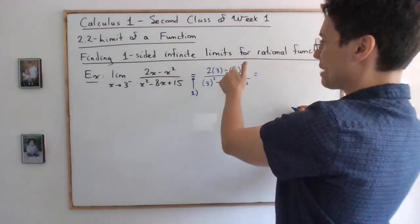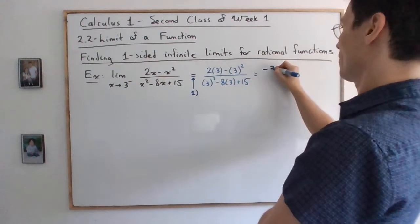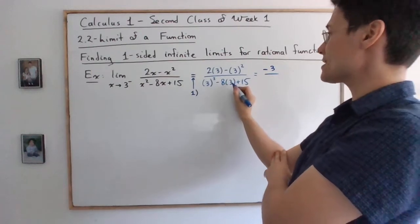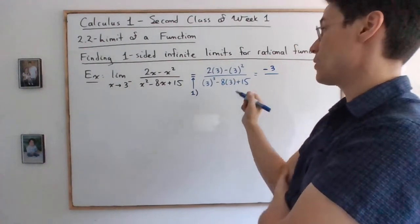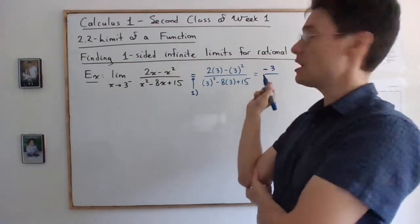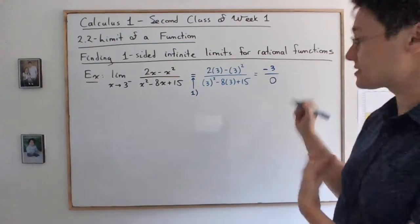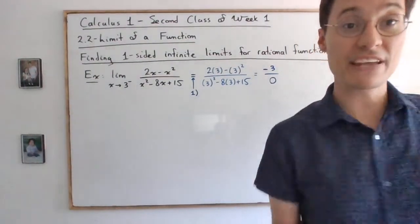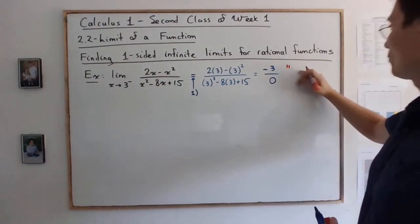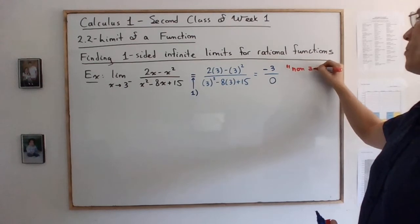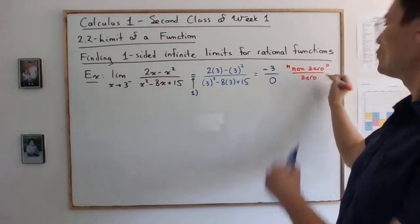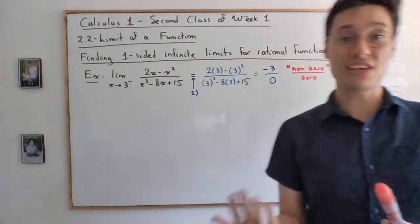So you have 6 minus 9, so negative 3. And then, you have 9 minus 24, so that gives us negative 15 plus 15, zero. So this is your verification of step number one. So you have here, non-zero over zero. So you're getting that. So in this case, you proceed to the next step.